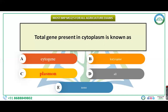Next question: total genes present in the cytoplasm is known as cytogen, karyogen, plasmon, or none. Genes present inside the nucleus on chromosomes are called karyogen. Some genes are present in the cytoplasm, known as cytogen. The total cytogen in the cytoplasm is called plasmon. The correct answer is plasmon.